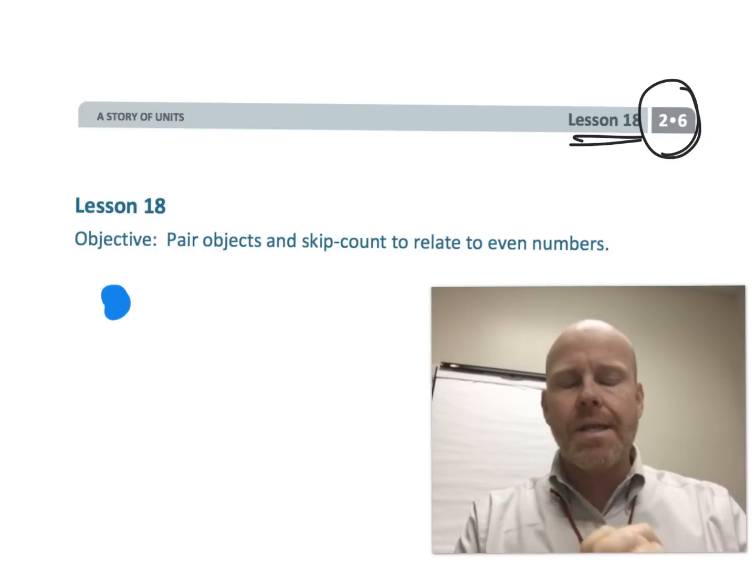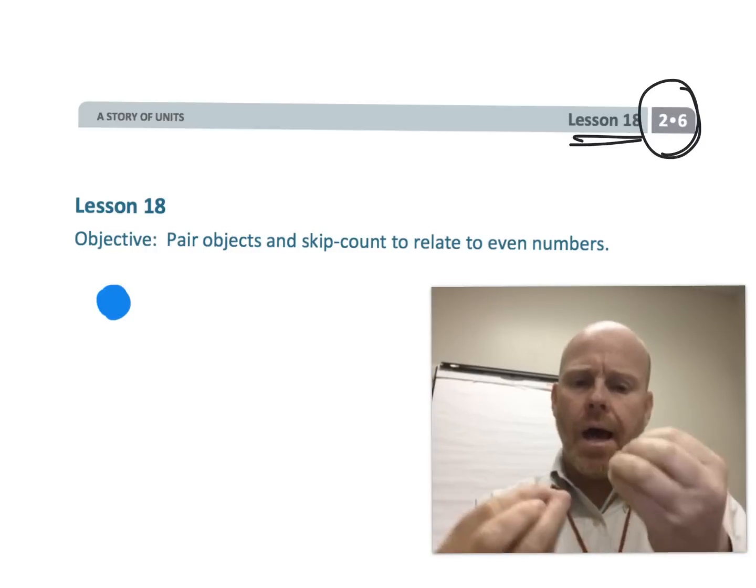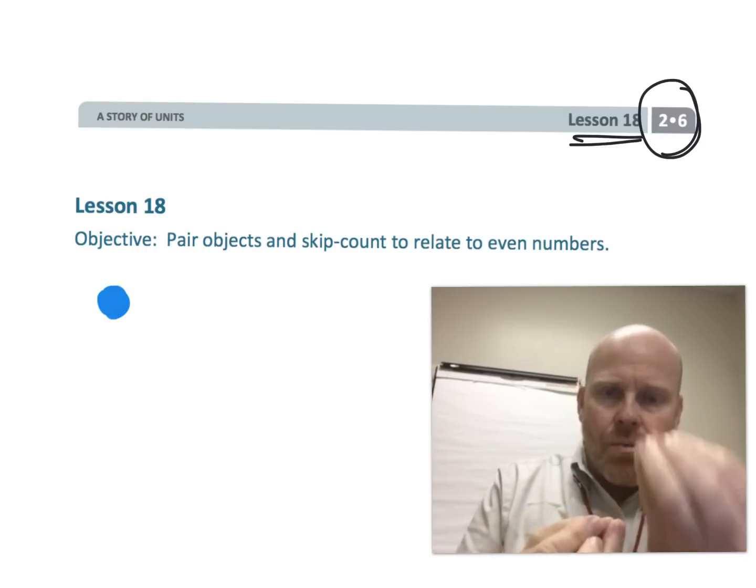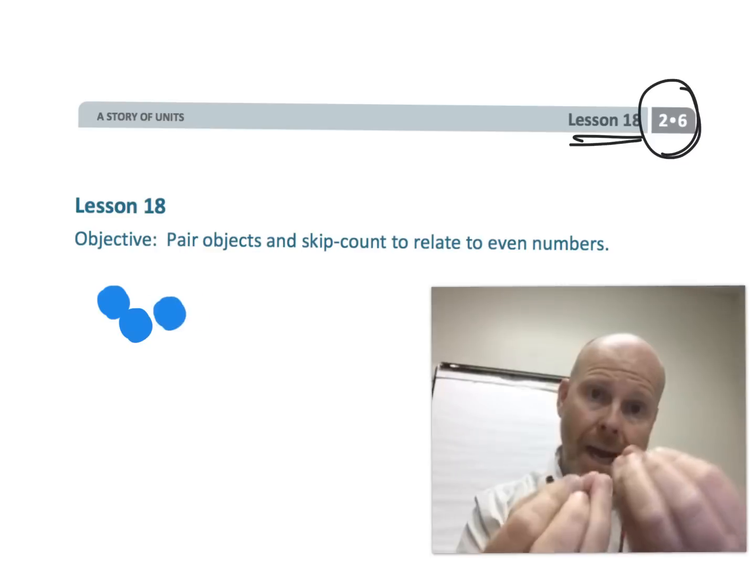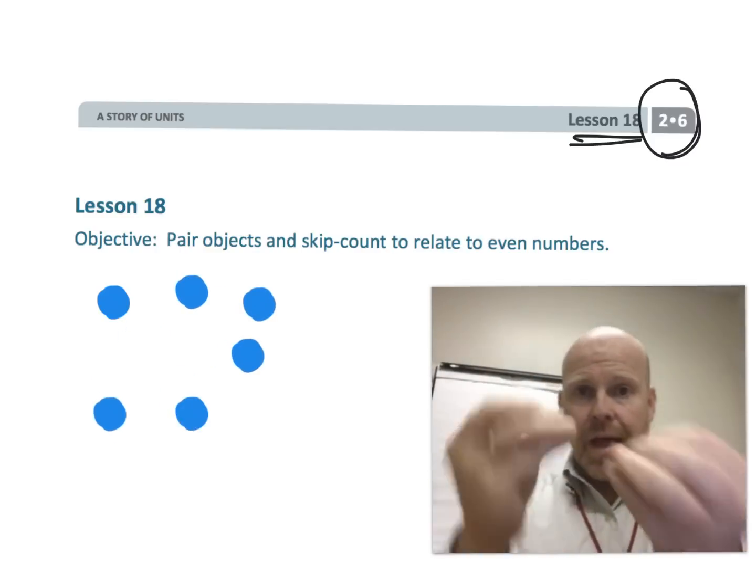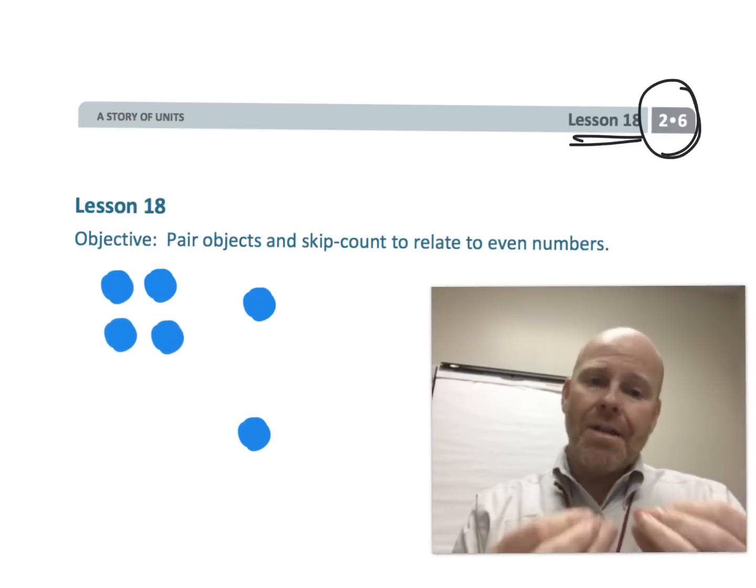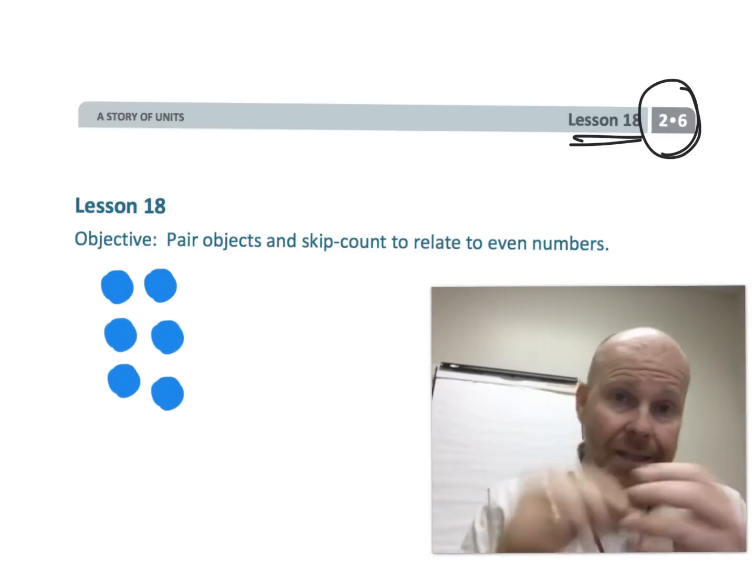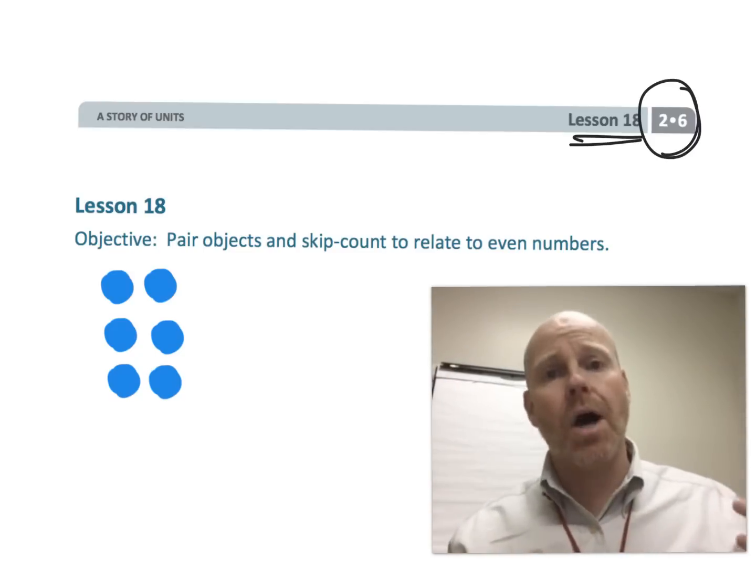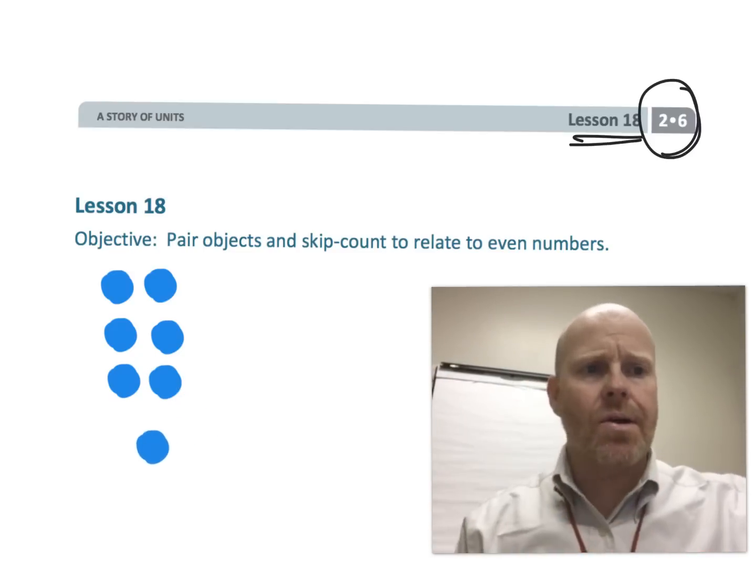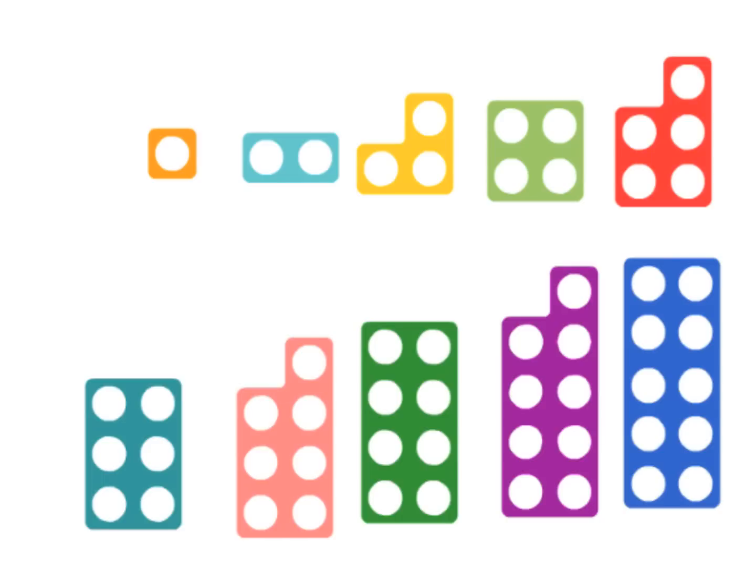We're thinking about evens as objects where each member of the group has a pair, has a partner. So if everybody has a partner then that number is called even. But if you have a lone guy that doesn't have a partner, well then it's odd. So let's get started on that.